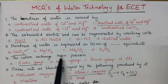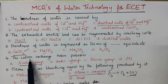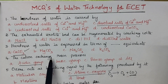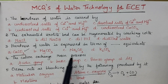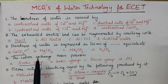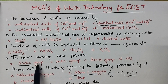The cation exchange resin possesses acidic groups. In general, a cation exchange resin is capable of exchanging its H⁺ ions with calcium and magnesium ions present in the hard water.